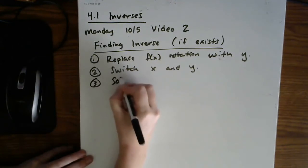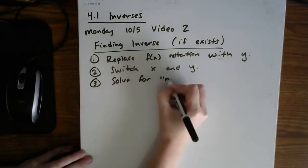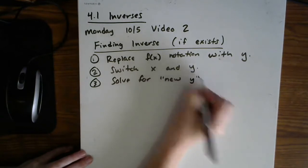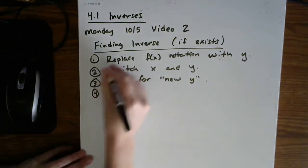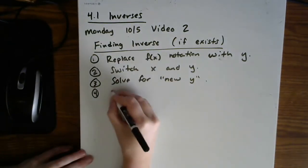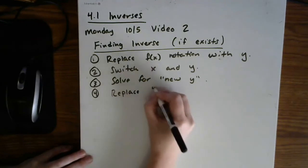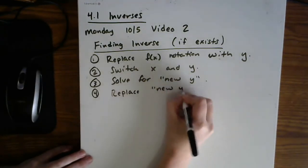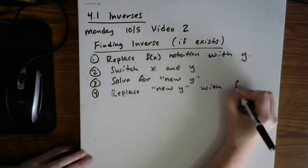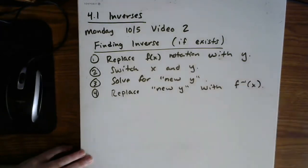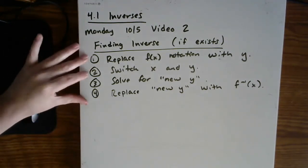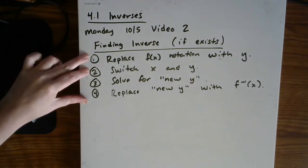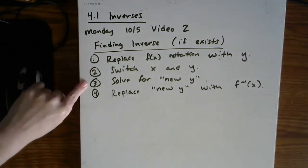Then we will solve for what I will call the new y. And then for the last step, let's just get back into function notation. So we will replace this new y notation with inverse notation. So part one, part two, and part four are really straightforward. That's the easy part. It's part three that's a little bit difficult.